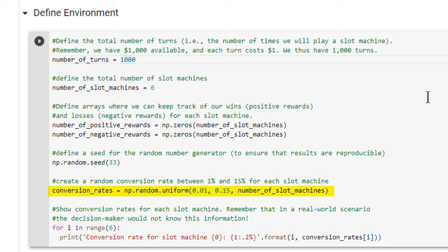Next, we create a random conversion rate between 1% and 15% for each slot machine, and then print those conversion rates to the screen so that we can see what's happening inside the computer's memory. Remember, that in a real-world scenario, the gambler would not know this information. Let's run this code cell and see what happens.